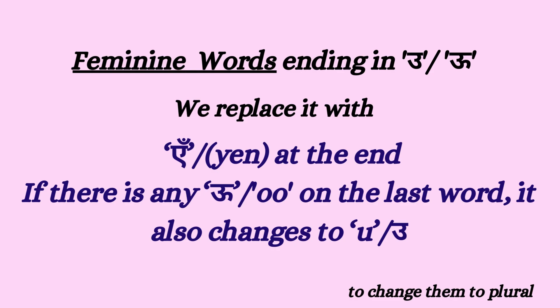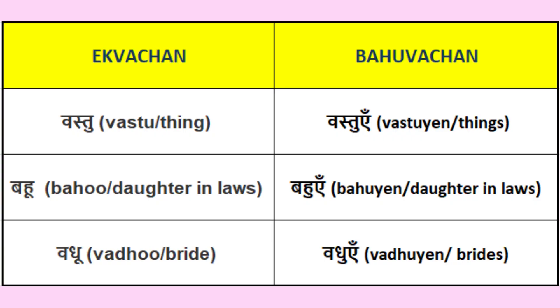Rule number 6: Feminine words which end in -u or -oo change to plural by adding -yein at the end of the word. If there is a long -oo on the last syllable, it also changes to short -u. For example: vastu → vastuyein, bahu → bahuyein, vadhu → vadhuyein.